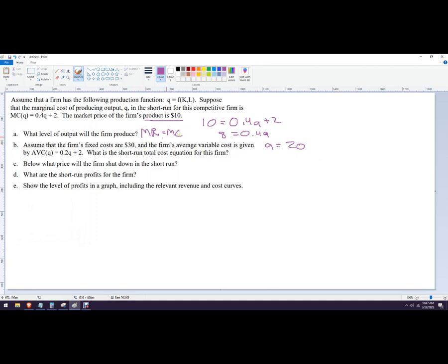Assume the firm's fixed costs are 30. Now it wants us to write out a total cost function. Our average variable cost is given. Average variable cost is the variable cost function divided by quantity. We want to de-average that. If you multiply both sides by Q, then you get the variable cost. So multiply everything by Q, and that gives me the variable cost: 0.2Q squared plus 2Q.